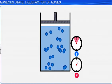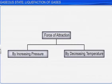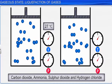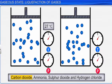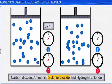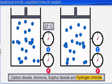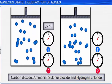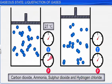Sometimes, we need to use a combination of both methods to liquefy a gas. For example, carbon dioxide, ammonia, sulfur dioxide and hydrogen chloride can be liquefied either by increasing the pressure or by decreasing the temperature.